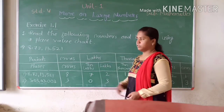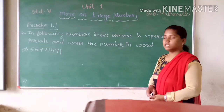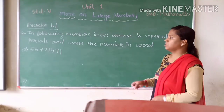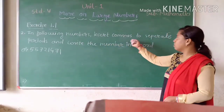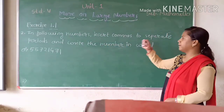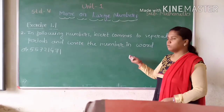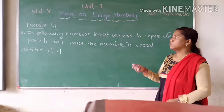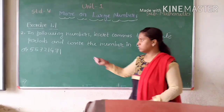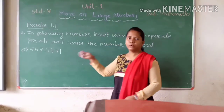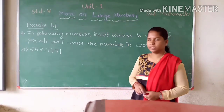Now we will go for the second question. In the following numbers, insert commas to separate periods and write the numbers in words. First we have to insert the comma in the given number and then we have to write that number in words.